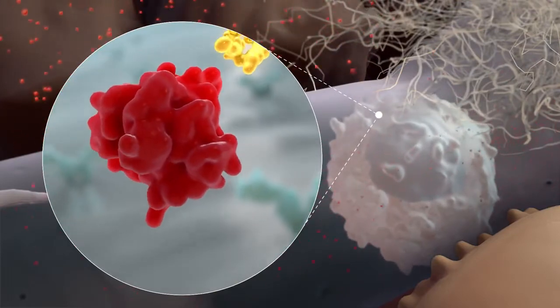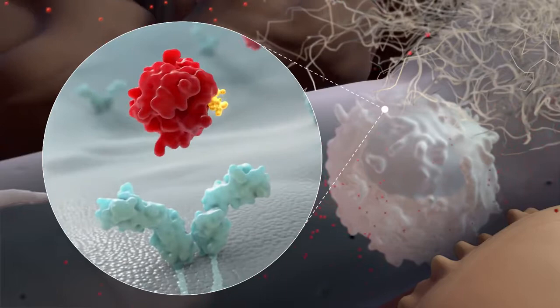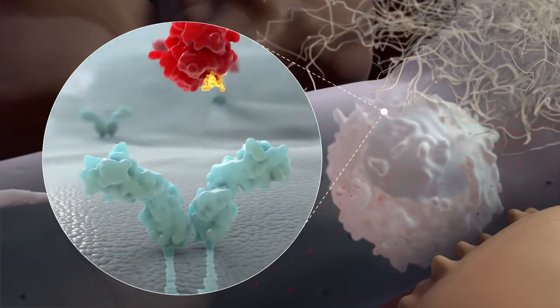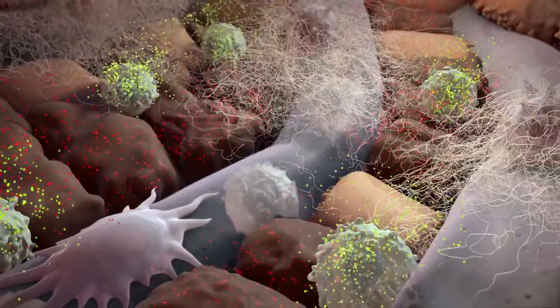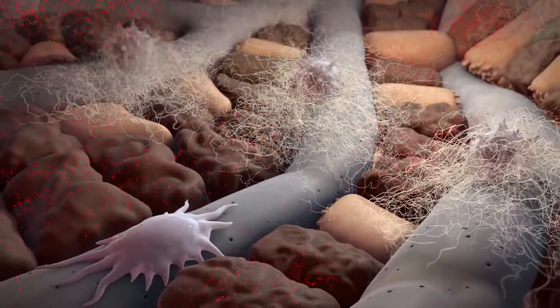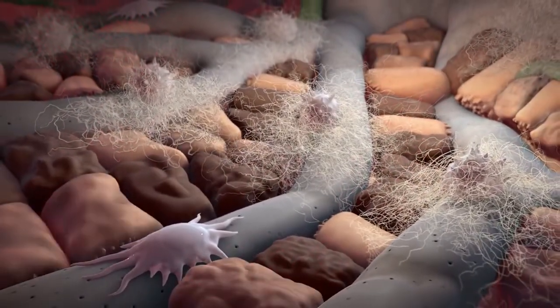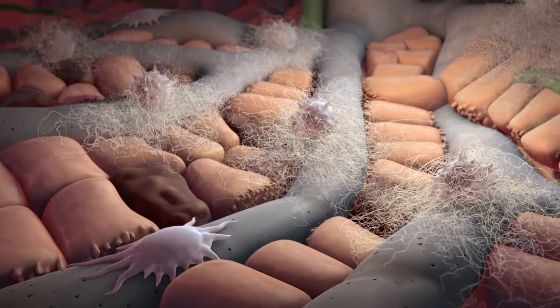CRV431 also binds to cyclophilin A which blocks the binding of cyclophilin A to specific receptors on inflammatory cells. This decreases infiltration of the cells into the tissue and production of harmful inflammatory molecules. As a result, CRV431 reduces inflammatory damage to the liver.